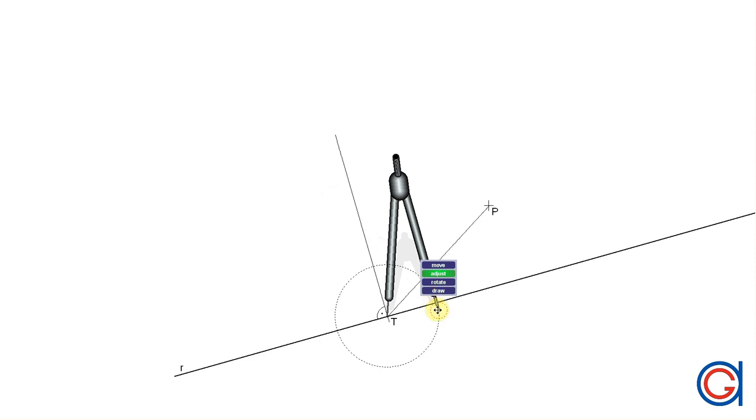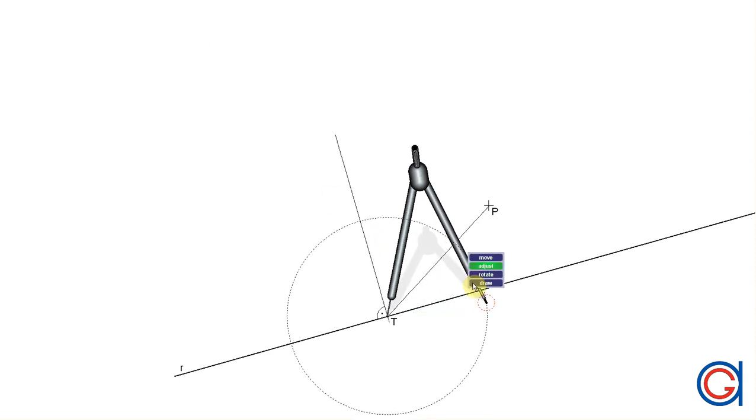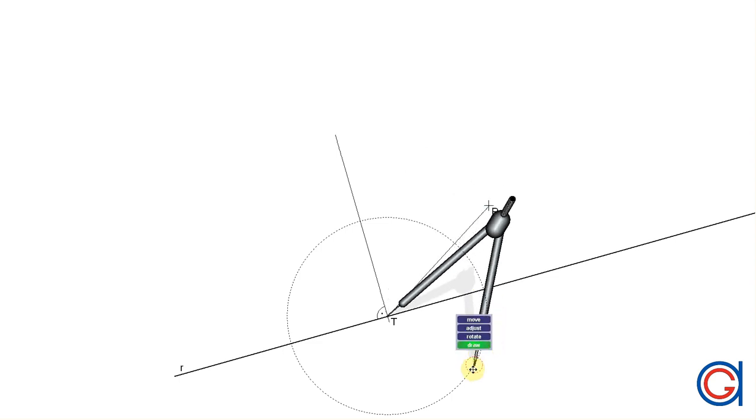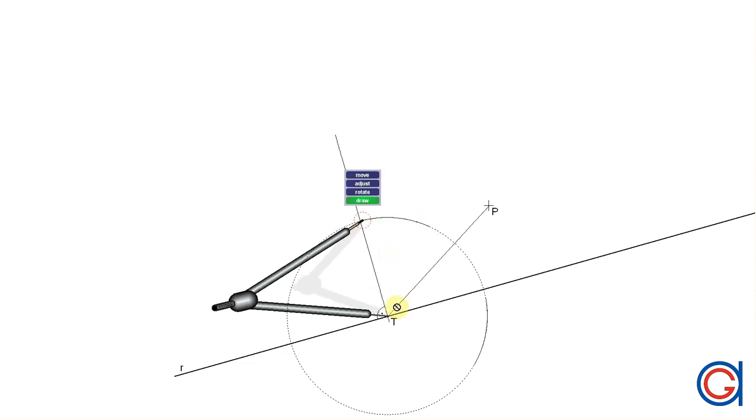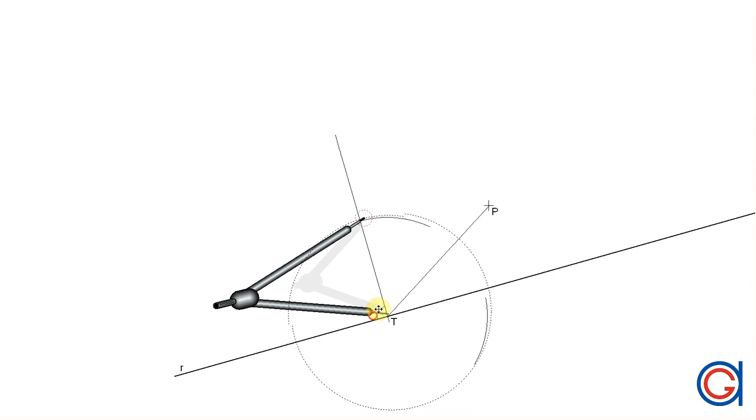And now, the next step, we're going to work out the perpendicular bisector of the line segment PT or TP. So, setting the compass on tangent point T and with a radius slightly longer than half the length of the line segment TP, we're going to scribe an arc above and below the line, as shown here.